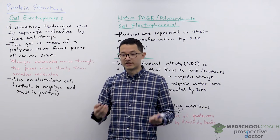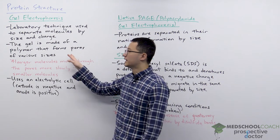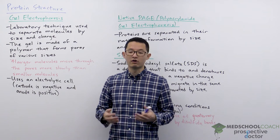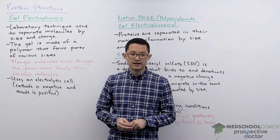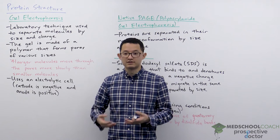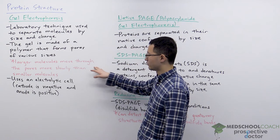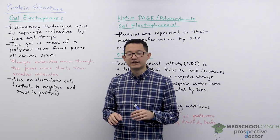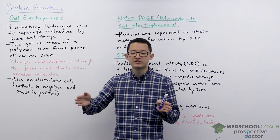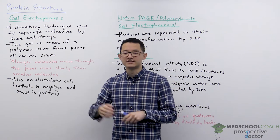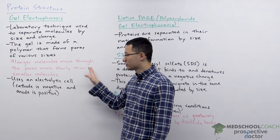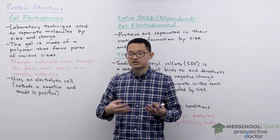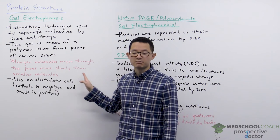From the name we know that there's going to be a gel. The gel is made of a polymer that forms pores of various sizes. Common polymers include agarose as well as polyacrylamide. For the MCAT it doesn't really matter which one they use, but in the research lab it does matter. The purpose of forming these pores is that molecules must pass through this matrix, and larger molecules move through the pores more slowly than smaller molecules. So the gel has a very important role in separating molecules by size.